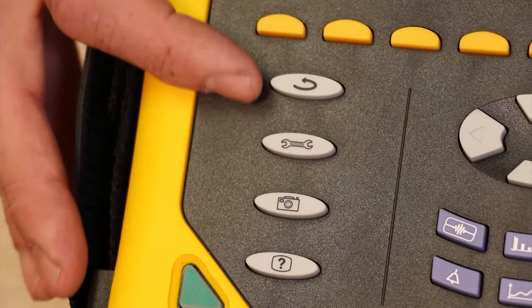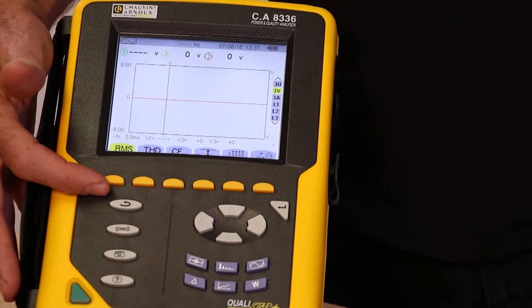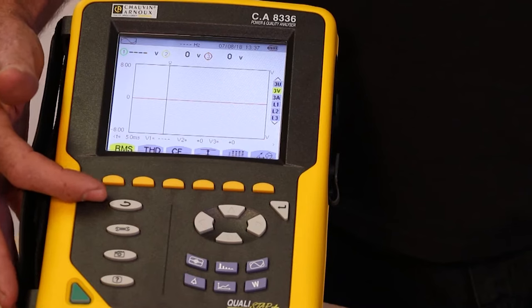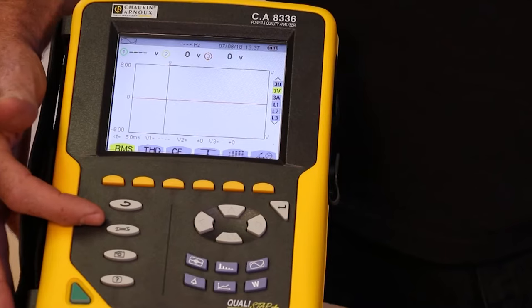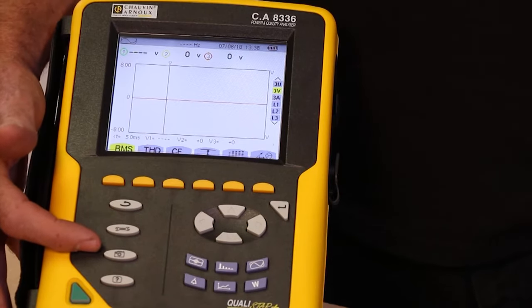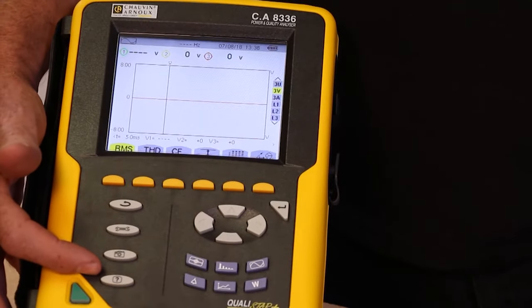On the left-hand side, there are four more keys. The top one takes you back up one level from any menu. The key with a picture of a spanner on it is a setup key. The key with a picture of a camera on it enables you to take a screenshot at any point. And below that, there's a help key.